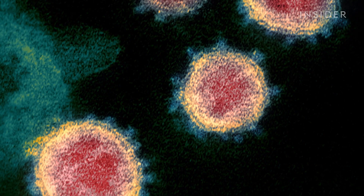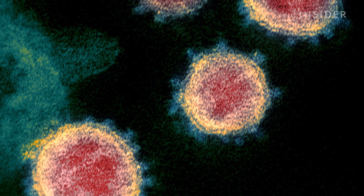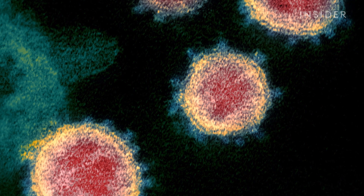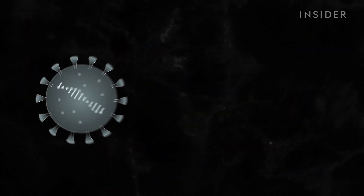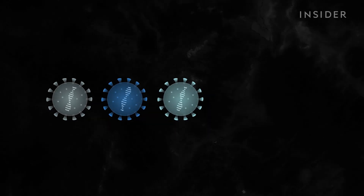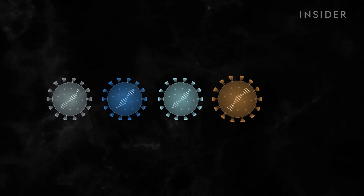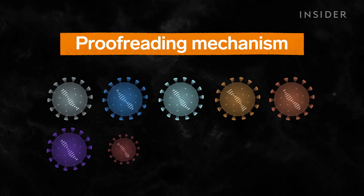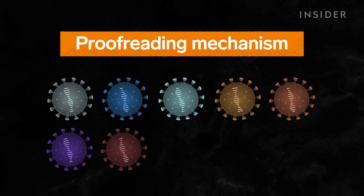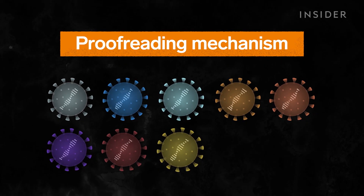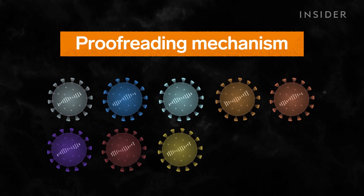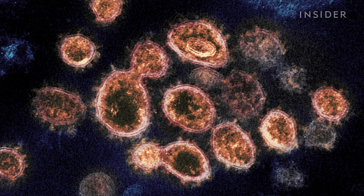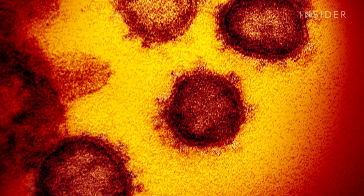This is SARS-CoV-2, the virus that causes COVID-19. It's a type of RNA virus, some of which mutate practically every time they replicate. SARS-CoV-2 is actually one of the rare RNA viruses that has a proofreading mechanism that slows down its mutation rate some. Despite that, it has mutated, and it will continue to mutate.